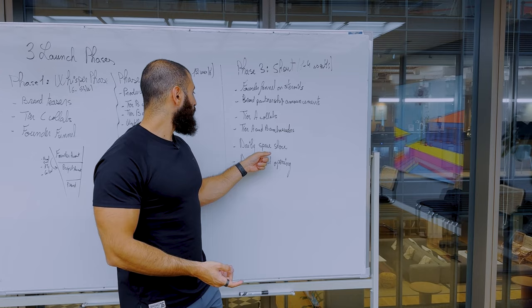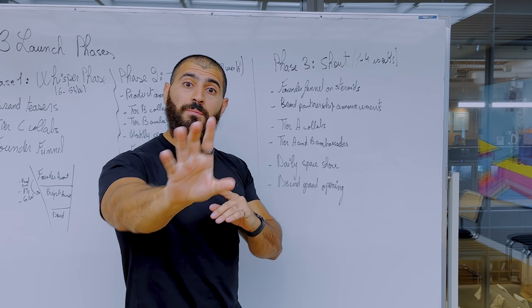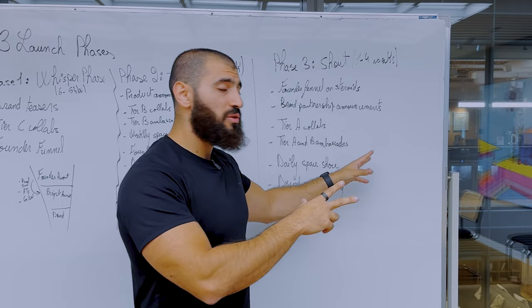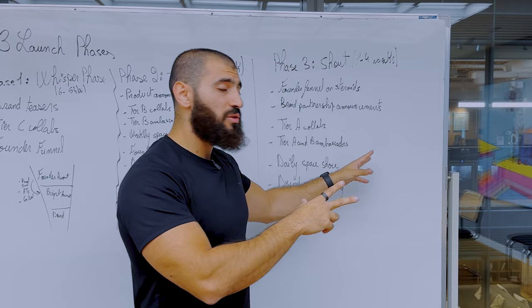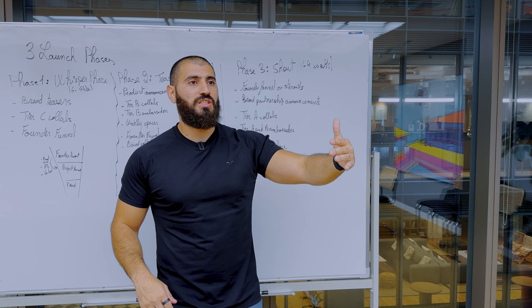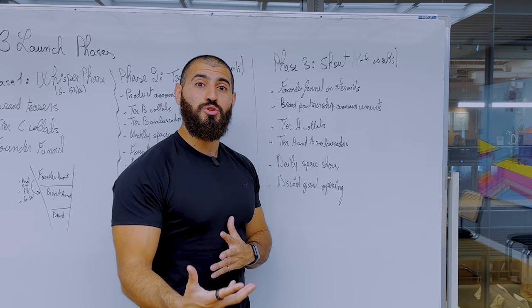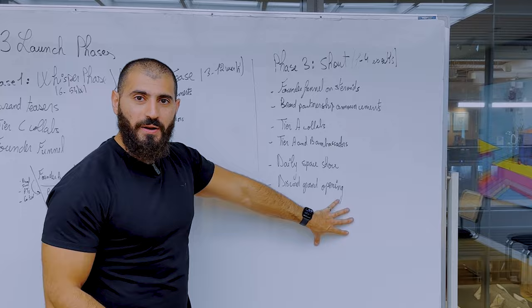Number five: daily Twitter space shows — same reasoning as phase two but on steroids, every single day. Organize shows at different times with a two-hour interval each day to hit every time zone. There are three main time zones in Web3's target audience: US/Canada, Europe, and Asia. So if day one you do 10 AM Eastern, next day do 12 PM, then 2 PM, then 4 PM, then 6 PM — that way you hit every time zone and every buyer.